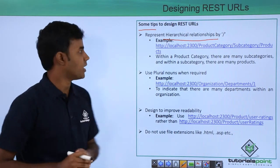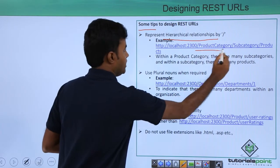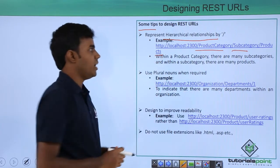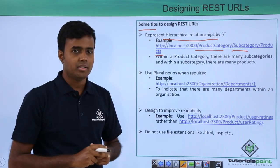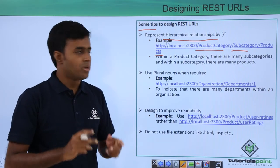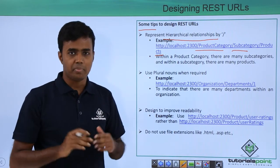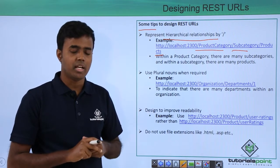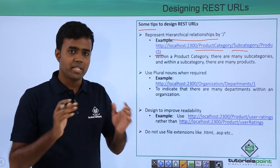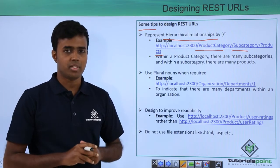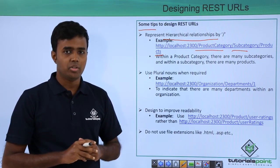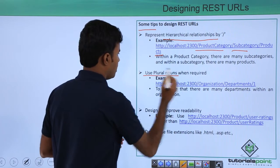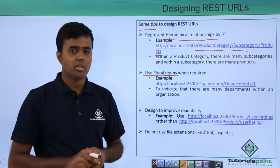If we have a hierarchical relationship — for example, product category, subcategory, and product — where there is one product category, within one product category there can be multiple subcategories, and within each subcategory there can be multiple products, it is better to use slash to represent such hierarchical relationships.